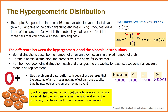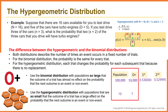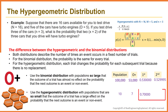Use the hypergeometric distribution with populations that are so small that the outcome of the trial has a large effect on the probability that the next outcome is an event or non-event. For example, in a population of 10 people, 7 have O positive blood. The probability that the first randomly selected person has O positive blood is 70%. If the first person has O positive blood, then the probability that the second person has O positive blood is 66.66%. As you can see, the difference is too large to ignore for many applications.